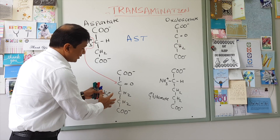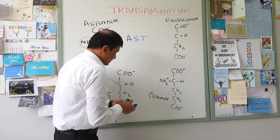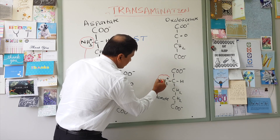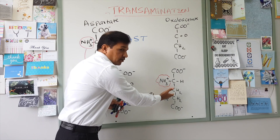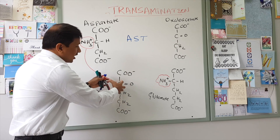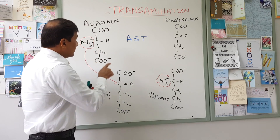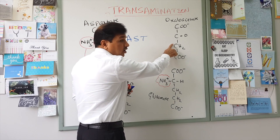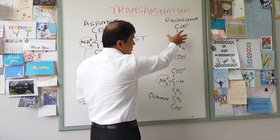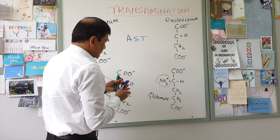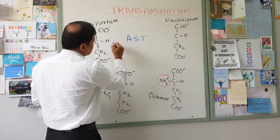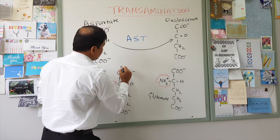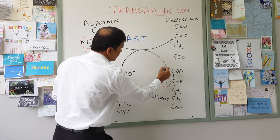Once the alpha ketoglutarate receives this amino group, it will be converted to glutamate. Glutamate is an amino acid — basically alpha ketoglutarate after receiving the amino group. Now what happened to aspartate after losing this amino group? Aspartate will be converted to oxaloacetate, which is an alpha keto acid. So aspartate is converted to oxaloacetate while alpha ketoglutarate is converted to glutamate.